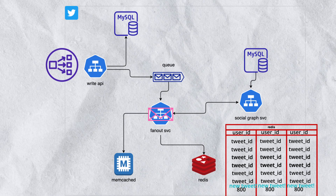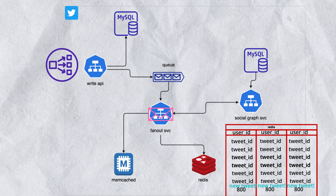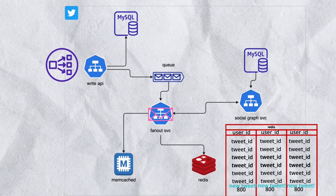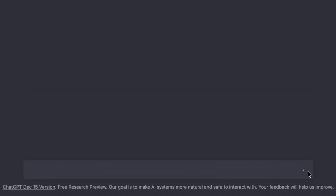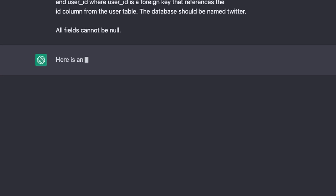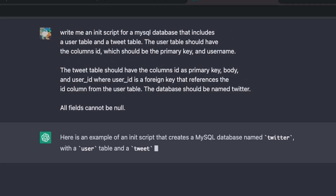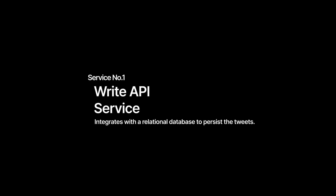Now let's see if ChatGPT can help us to build this architecture. We're going to start with building out individual services before composing them together to form the overall architecture. All of the messages that I use to get ChatGPT to generate the code and the configuration, I will leave in the description below. Let's start with the Write API service.